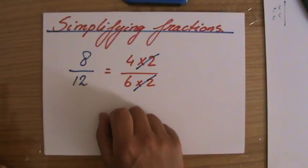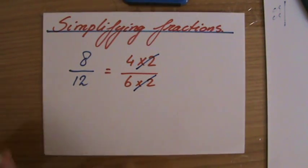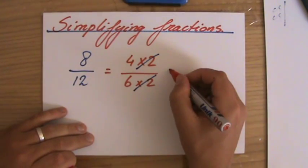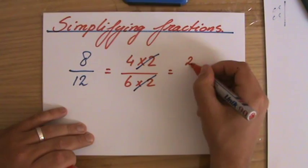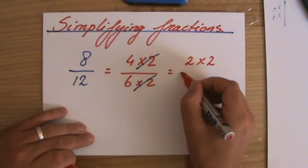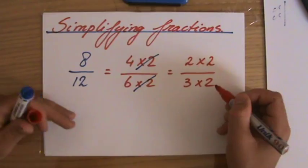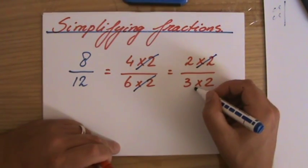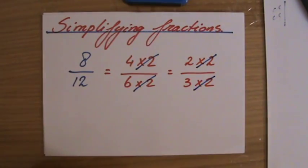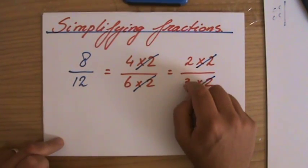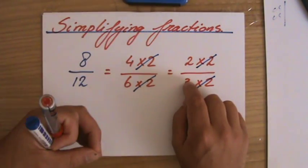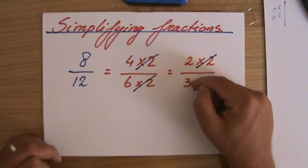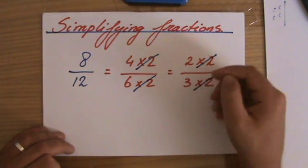But 4 over 6 - is that the simplest form you can write this fraction in? No, it's not, because there still is a common factor. 4 is the same as 2 times 2 and 6 is the same as 3 times 2, so they share another factor 2 which I have to get rid of. Now it says 2 over 3. Do 2 and 3, do the numerator and the denominator share another factor? No. 2 over 3.